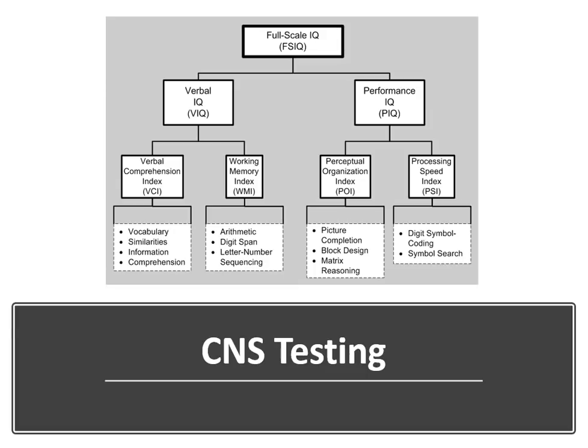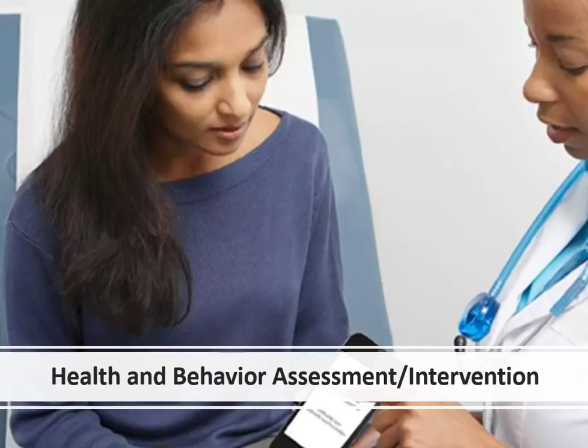Next, on page 712, we have our central nervous system assessment tests, beginning on pages 712, 713, and 714 with tables and lots of reading. The table on page 714 really helps you narrow down and isolate the code you're going to select. Other services starting on page 715 include developmental behavioral screening, assessment of aphasia, and cognitive performance testing.